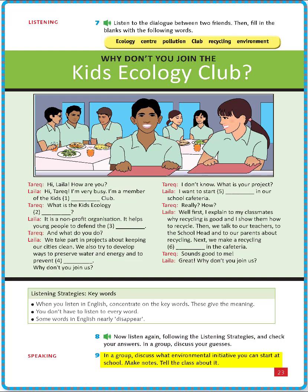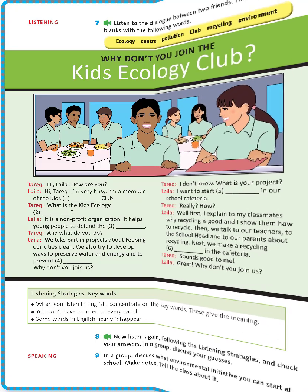Exercise 9: In a group, discuss what environmental initiatives you can start at school. Make notes to tell the class about it. For example: We sort materials, we plant trees and plants around the school, we turn off lights when not needed, we turn off the water when we finish using the toilet, we turn off the heaters, we try to make notes.